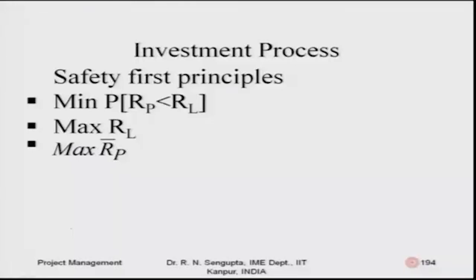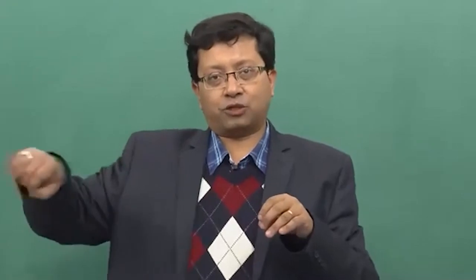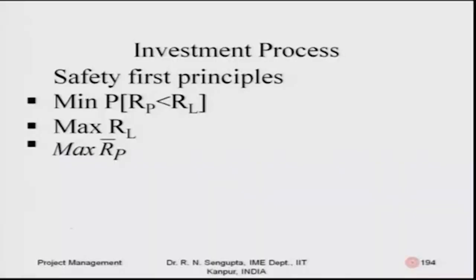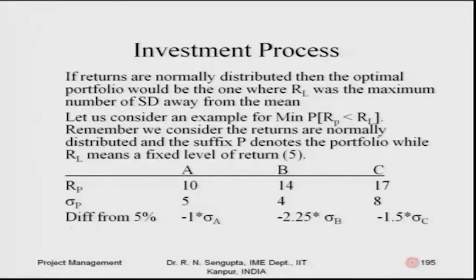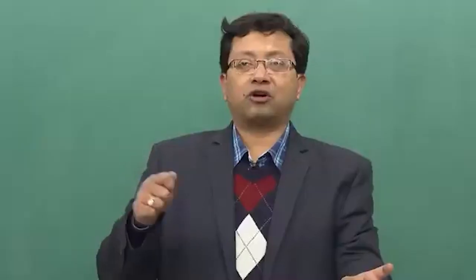As these are non-deterministic processes, returns are changing, and there would be instances where the value of the project portfolio is less than R_L. But you want to minimize such occurrences. Another formulation is to maximize R_L — the return threshold you are analyzing. The third is to maximize the average return of the portfolio considering combinations of projects can be changed according to investment weights. If returns are normally distributed, the optimal portfolio is the one where R_L is the maximum number of standard deviations away from the mean.